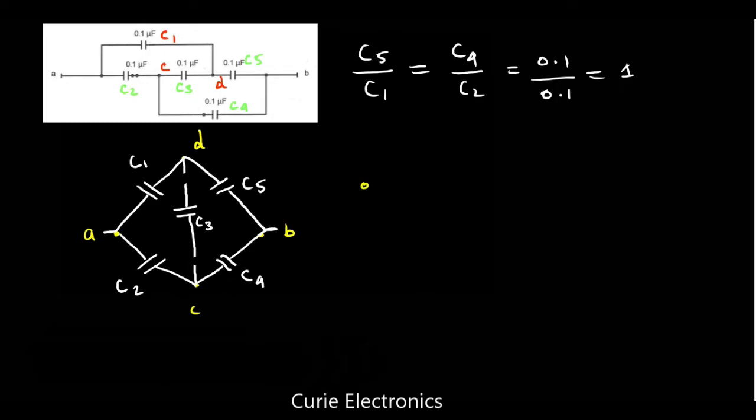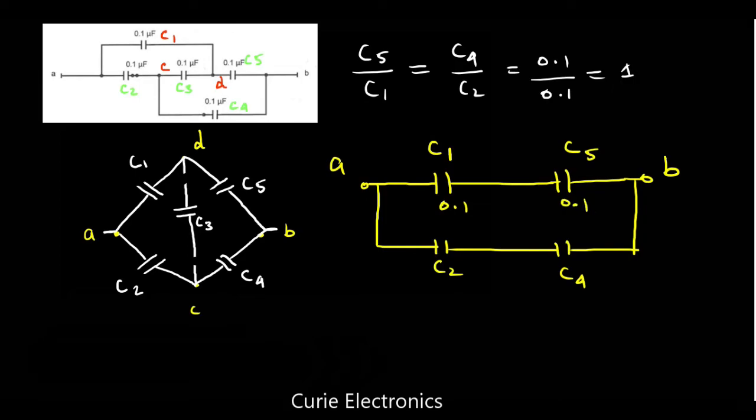Now we can redraw the equivalent circuit. Let this be A. Two capacitors, that is C1 and C5. This is the B point. Then parallel to it, what is there? C2 and C4. Now we know the values. This is 0.1 microfarad. This is also 0.1 microfarad. And C2 also 0.1 microfarad. And C4 also 0.1 microfarad.